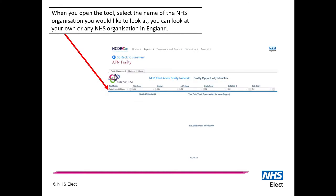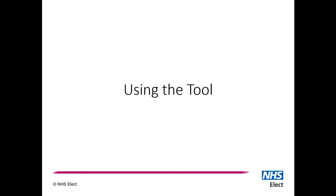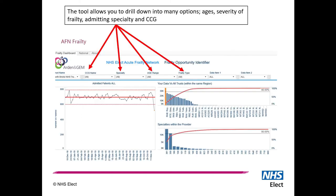That will take you to the login screen and allow you to log in to the Frailty tool. As soon as you open it, it will look completely blank, but with a series of menus across the top allowing you to drop one down and select your organisation name. You will then be presented with a screen that looks similar to this.